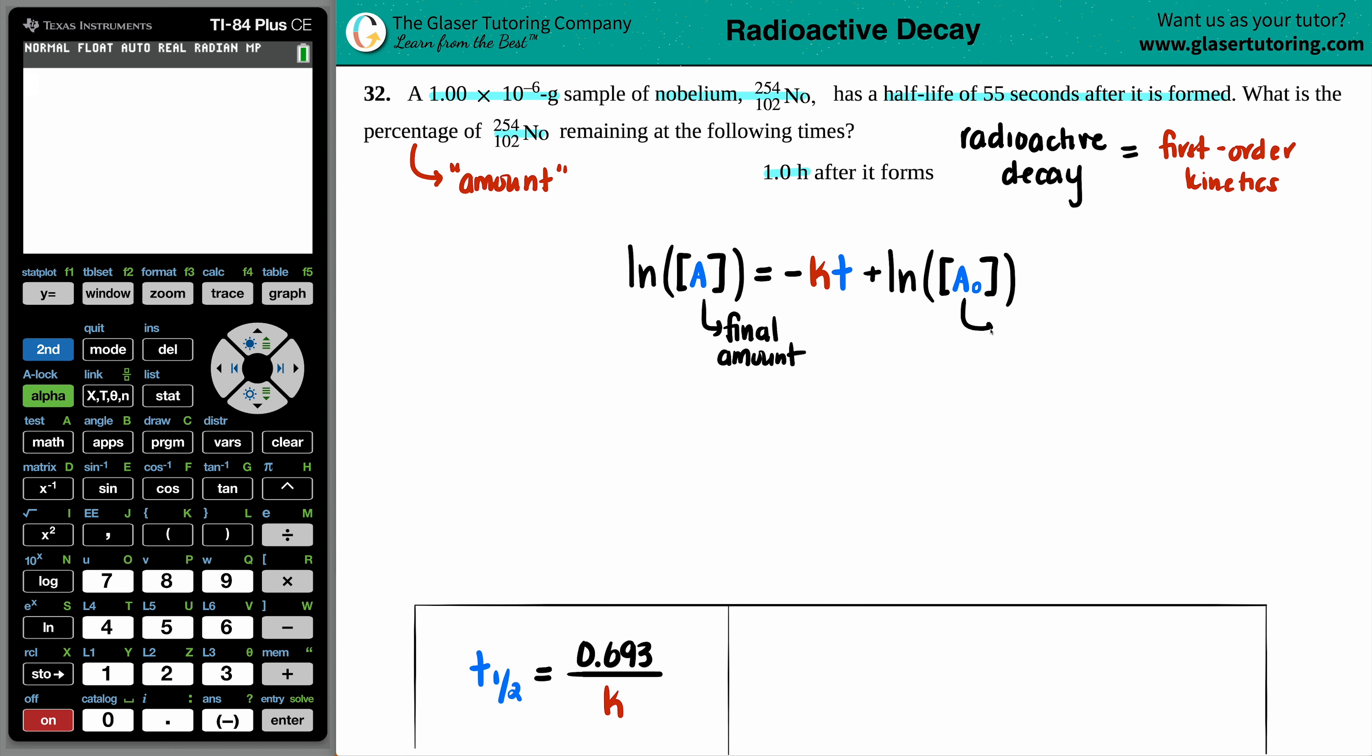Just know that this one without the zero, this is the final amount, which means that this one with the zero - that just means that no time has passed - that's the initial amount. Now we're looking for the percentage remaining, so we're definitely looking for a final amount.